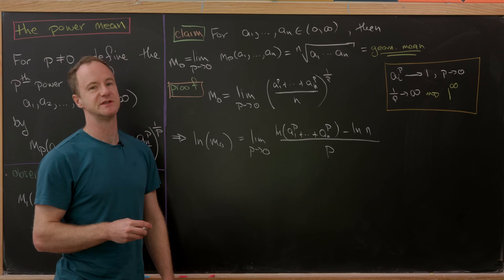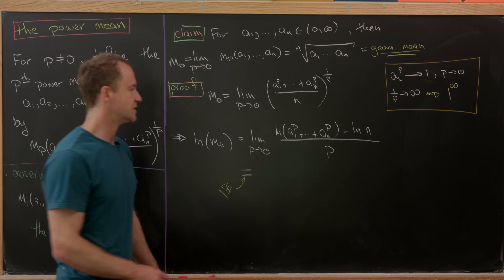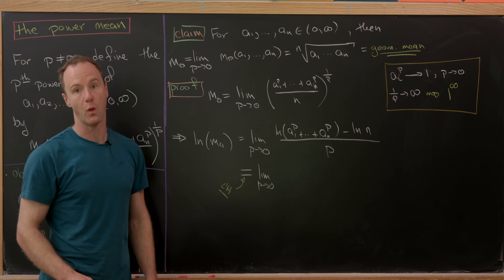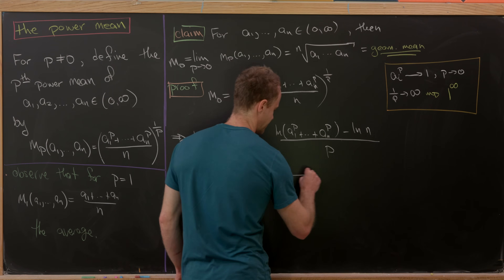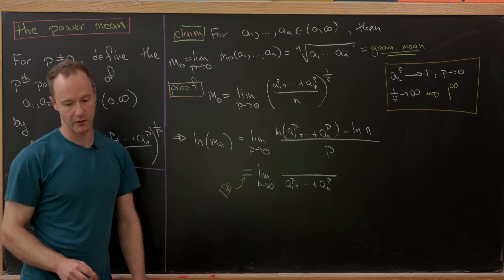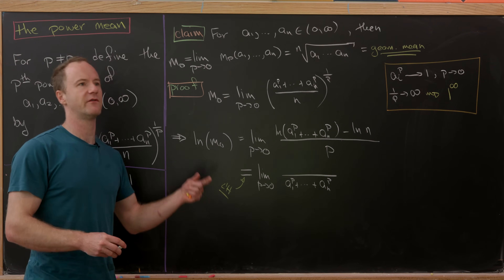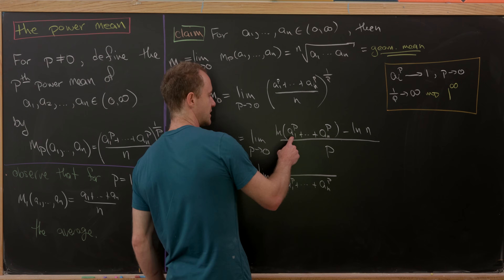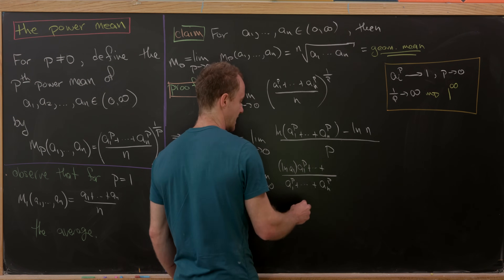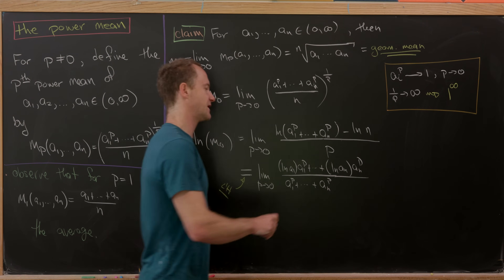With a 0/0 indeterminate form, we apply L'Hôpital's rule — we take the derivative of numerator and denominator. The derivative of the denominator (p) is 1. By the chain rule, the derivative of the numerator brings the sum to the denominator, and using the rule for differentiating exponentials with base not e, the derivative of a₁^p is (ln a₁)·a₁^p, and similarly for aₙ^p.